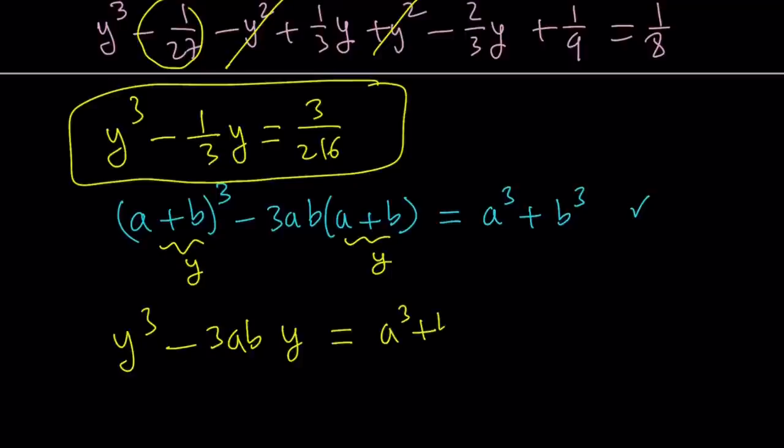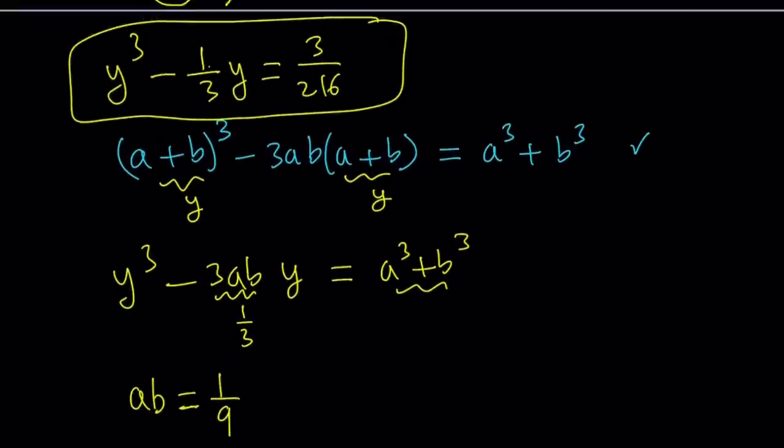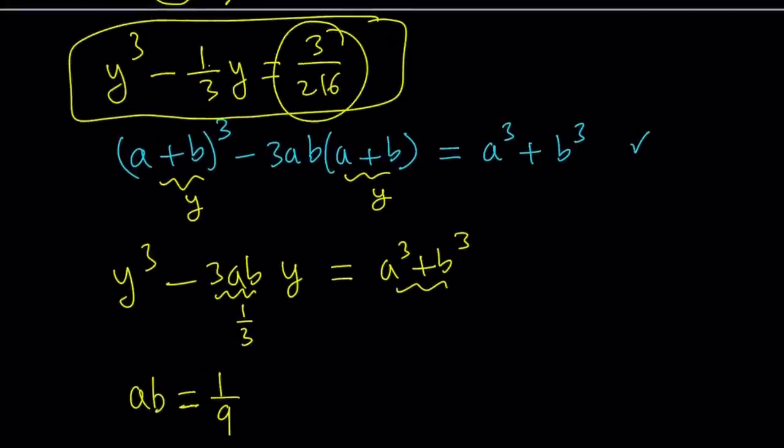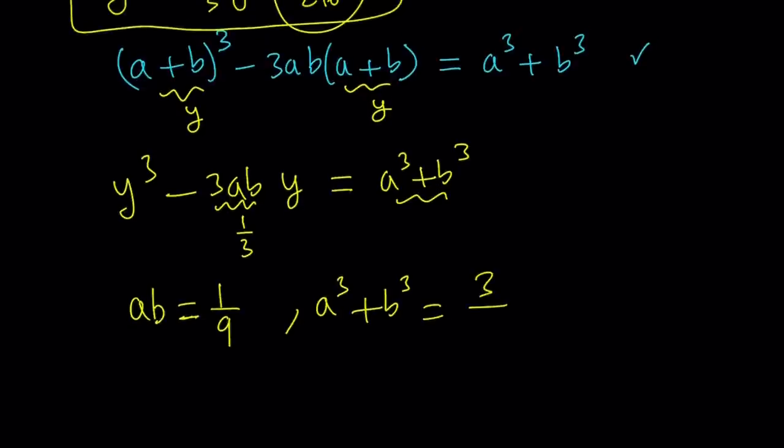Now notice that we have a y cubed here. Coefficient is 1. We have a y here. The coefficient is negative 3ab. And here it's negative 1 third. So if you set the coefficients equal, 3ab should be equal to 1 third, which means ab is going to be 1 ninth. And if you look at the constant term here, a cubed plus b cubed, that should equal our constant term, which is 3 over 216. So that gives us another equation.